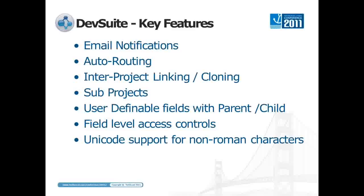Another aspect of DevTrack we use a lot is sub-projects, which sounds really simple but is extremely handy for creating a filtering system that allows us to have bugs being tested by multiple different groups in the same project. You can create sub-projects based on SKU or even based on sprints, so you can quickly sort bugs and help people manage huge bug databases.